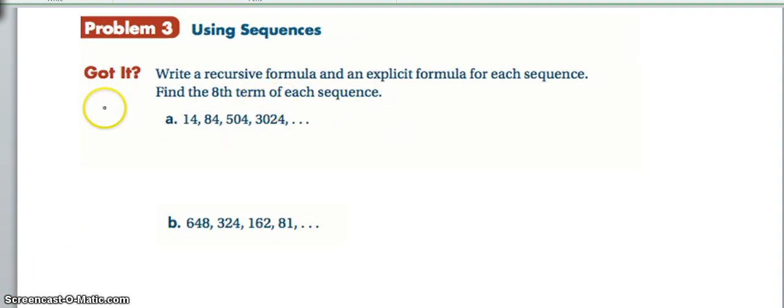So go ahead and pause the video and try this. I'm going to use a recursive formula on the first and an explicit formula on the second problem here. When we set up our recursive formula here, it's our ratio of 6 times a to the n minus 1. But in order to find our 8th term, we'd have to know what the 7th term was. And since we don't, we just go ahead and decide not to use this. Now we can discuss that deeper in class if you'd like. But for now, let's just use an explicit formula.